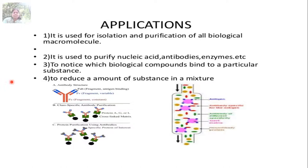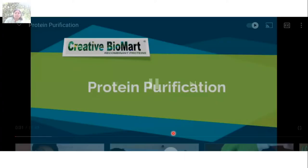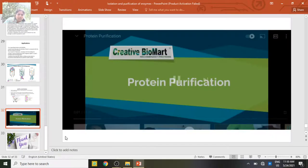What are the applications of affinity chromatography? It is used for isolation and purification of all biological macromolecules — nucleic acids, antibodies, enzymes, and other biological compounds that bind to a particular substance. For example, in the isolation of mRNA, the polyadenylated tail of mRNA binds to complementary bases attached inside the column.